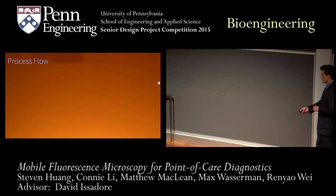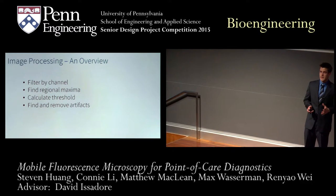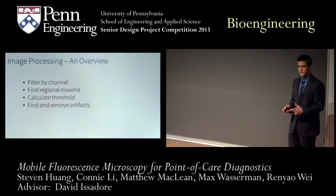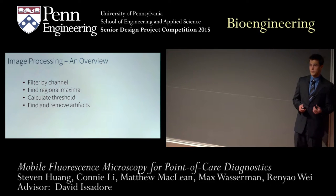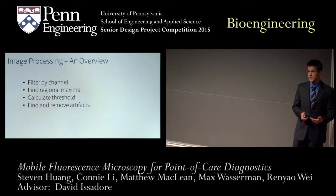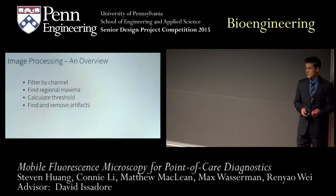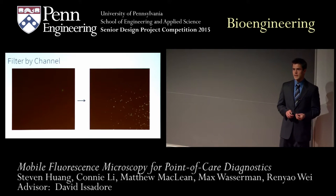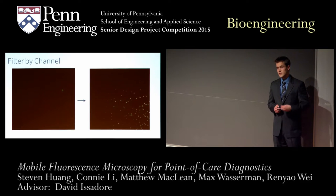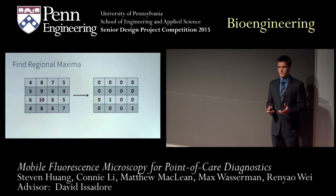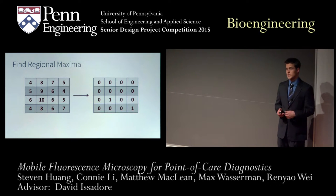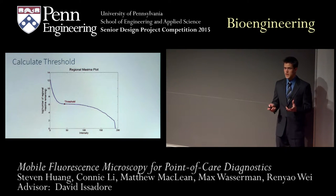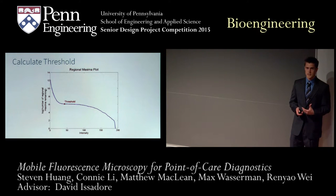After image capture, images are sent to our server where a MATLAB script processes them. The image analysis algorithm consists of four basic steps. First, we separate the image into its separate color channels. Second, we find spots in the image by looking for regional maxima — a regional maximum is a pixel for which all surrounding pixels have a lower intensity value. In this example, we use carmine beads which fluoresce in red and are excited using green LED light, so we separate out the red channel to retain only the emitted fluorescent light. We then have a large set of regional maxima, some corresponding to fluorescent spots and some to stochastic noise.